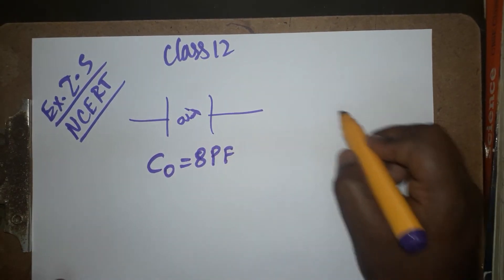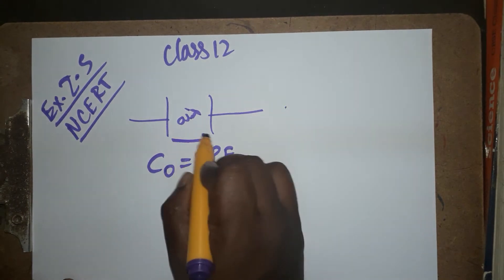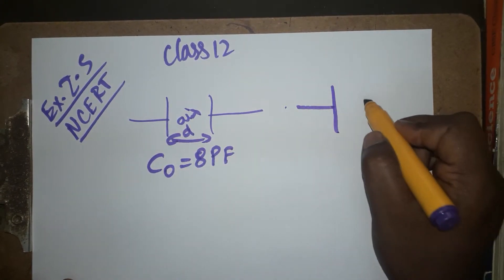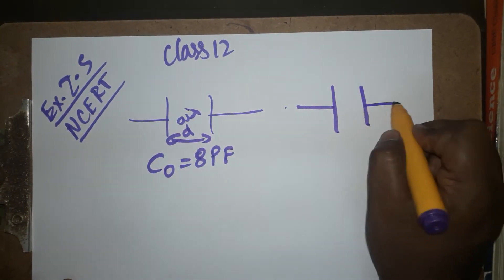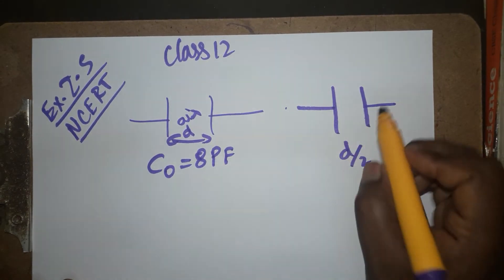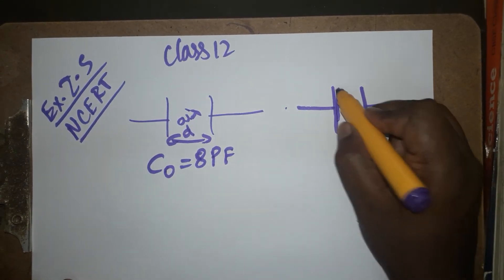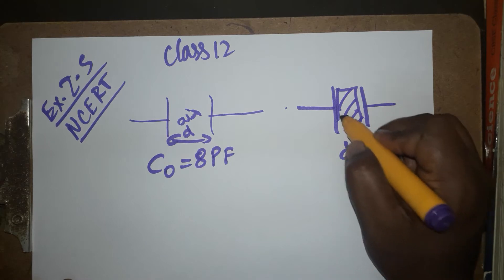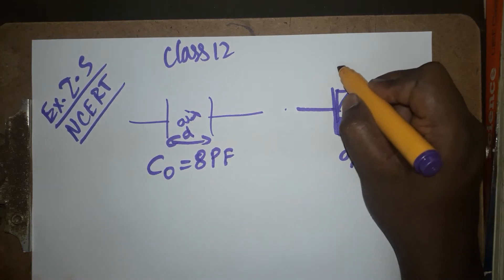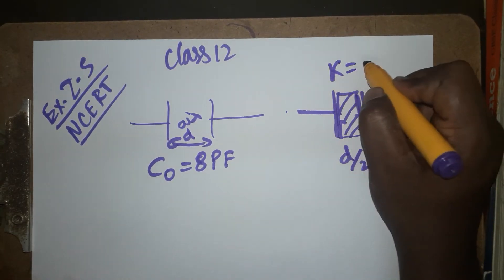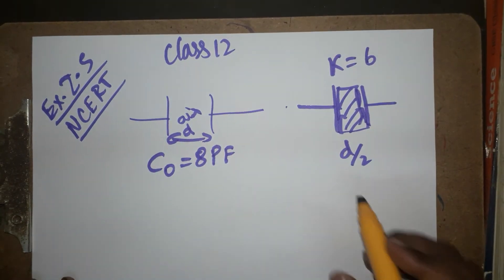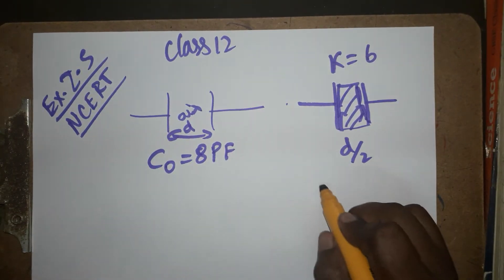In the second situation, the distance is reduced to half — the distance becomes d/2. At that reduced distance, a dielectric medium is placed inside, and the dielectric constant value is 6.